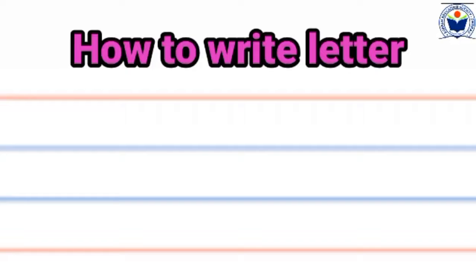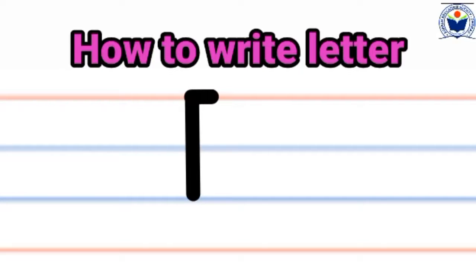How to write letter F on four lines. So let's start. We will start from the top red line. Make a standing line till the second blue line. And a sleeping line on the top red line. One more sleeping line on the first blue line. So simple.